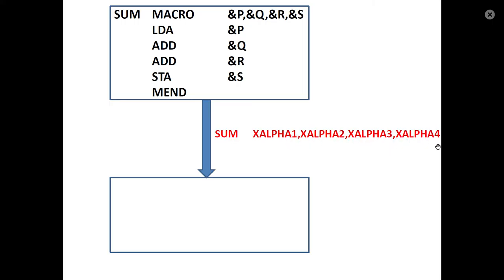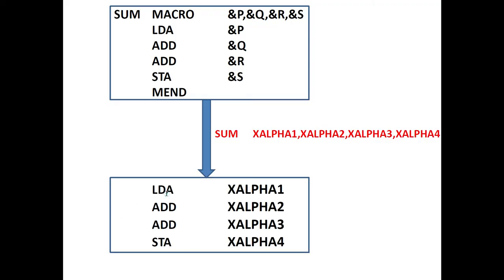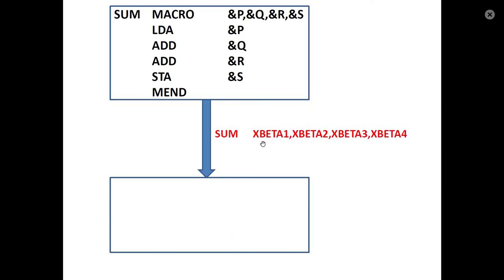In the expanded code, the macro body is expanded. The arguments are substituted: LDA X_ALPHA1, ADD X_ALPHA2, ADD X_ALPHA3, STA X_ALPHA4. The second call of the same macro is: SUM X_BETA1, X_BETA2, X_BETA3, X_BETA4.